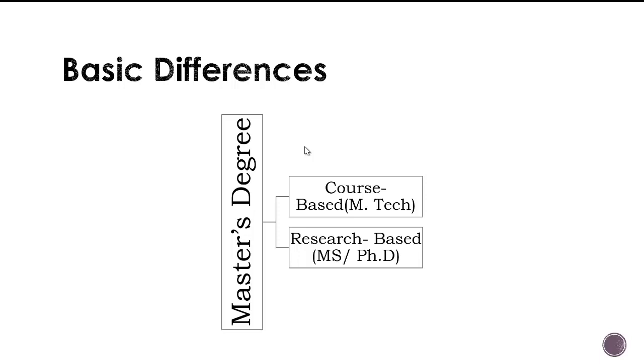So when it comes to a course based degree, it's more of courses. For example you have to do 4 plus 4 plus 3 courses, which means that you might have at least 7 to 8 core courses and laboratories, it's kind of your extended B.Tech.